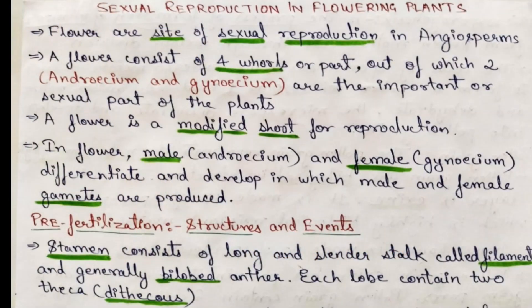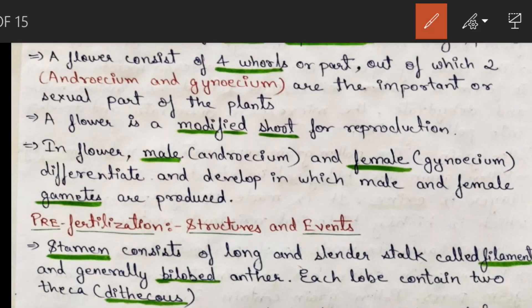Flowers are the site of sexual reproduction in angiosperms. A flower has four whorls: calyx, corolla, androecium, and gynoecium. Androecium and gynoecium are the main whorls, while calyx and corolla are accessory whorls. An important point to remember: a flower is a modified shoot for reproduction.